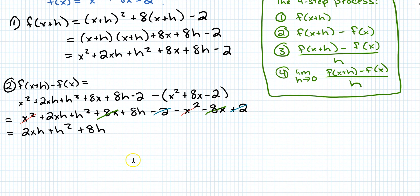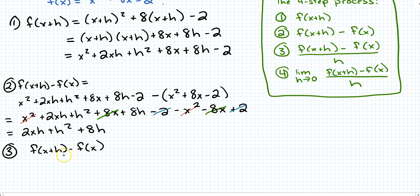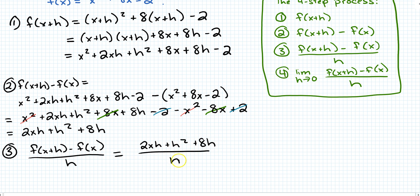Moving on to step 3: take the answer from step 2 and divide by h. So we have 2xh plus h squared plus 8h, all divided by h. I can cancel an h from every term in the numerator, giving me 2x plus h plus 8, since h squared divided by h is just h, and 8h divided by h is 8.